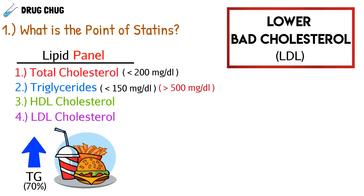The third thing on the lipid panel is our HDL cholesterol, or high-density lipoprotein cholesterol — our good cholesterol. We want more and more HDL in our body. In men we typically want more than 40 milligrams per deciliter, and for women we want a little higher — over 50 milligrams per deciliter.